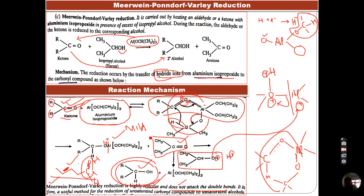In summary, Meerwein-Ponndorf-Verley reduction involves conversion of carbonyl compounds - whether aldehydes or ketones - into the corresponding alcohols, in the presence of excess of isopropyl alcohol, and the catalyst used is aluminum isopropoxide. The mechanism of this reduction involves hydride transfer from the aluminum isopropoxide to the carbonyl compound, with formation of a six-membered transition state. Finally, this reaction is highly selective - if you have a double bond in your carbonyl compound, that double bond doesn't get reduced. This method can be used for the preparation of unsaturated alcohols.